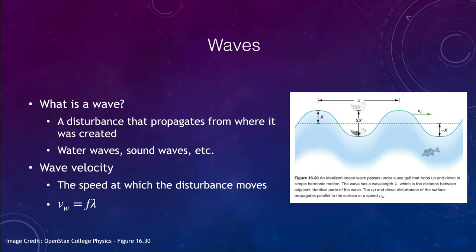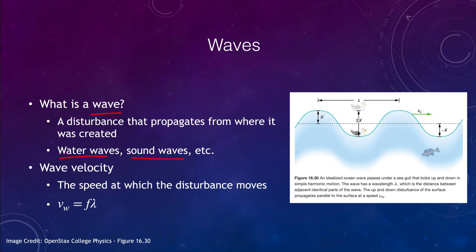Those are a couple of examples of resonance. Now let's define what we mean by a wave. A wave is a disturbance that propagates away from where it was created. We have things like water waves, sound waves, and even light waves that travel outward from where they are created. You can make your own wave with a piece of string — tie it down at one end, shake it up and down, and watch a wave travel across.